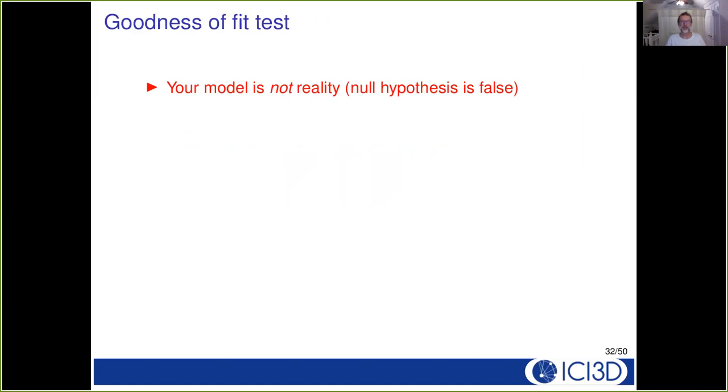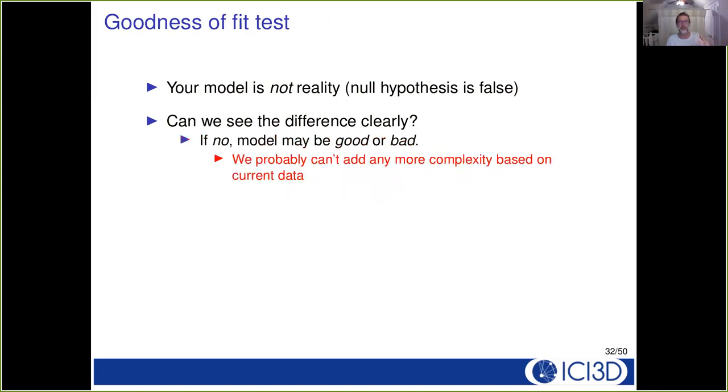How does that relate to our goodness of fit test? Our model is not reality. The null hypothesis is always going to be false. And so the goodness of fit test is asking us in some sense, do we think we can see the difference clearly? If we can't see the difference clearly, the model may be good. The model may be bad. We probably can't just add more complexity to the model based on the current data. We may need to refine the model. We may need to gather more data, but we may be at a temporary dead end.